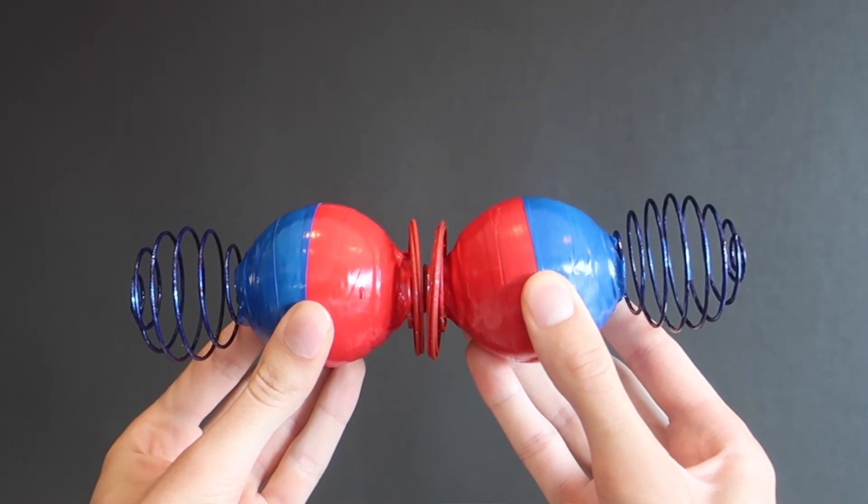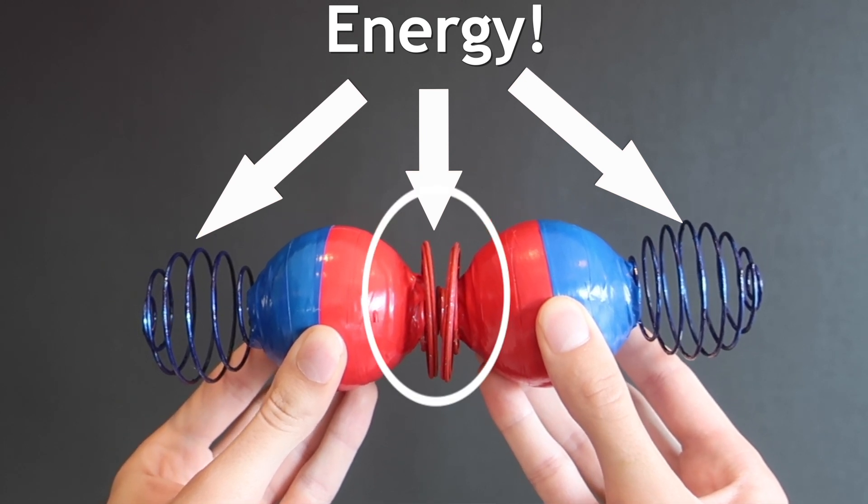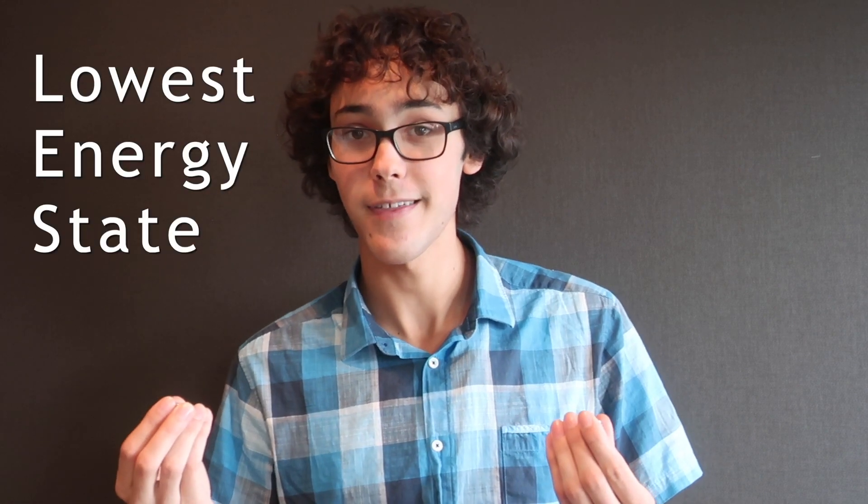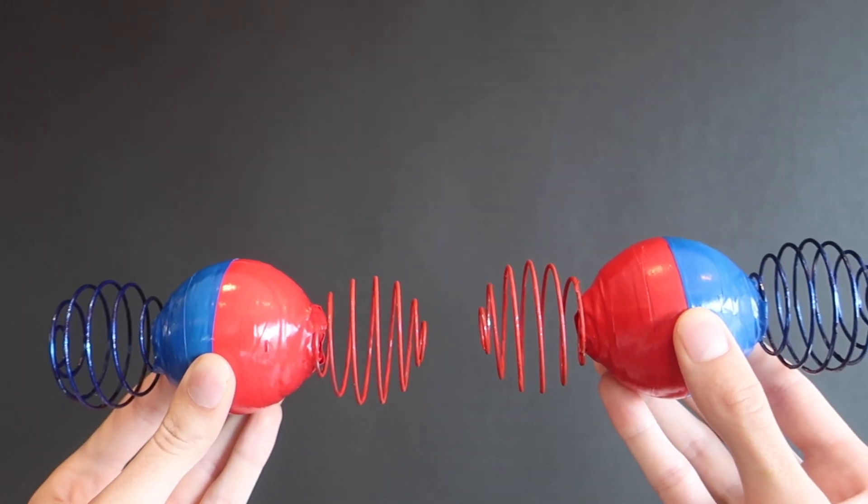And since magnetic fields contain energy, you're cramming more energy into a tiny space. And this is an unfavorable state, because everything in the universe wants to reach the lowest energy state, where energy is most spread out, not crammed together. So naturally, the two magnets push apart from each other, just like the two springs.